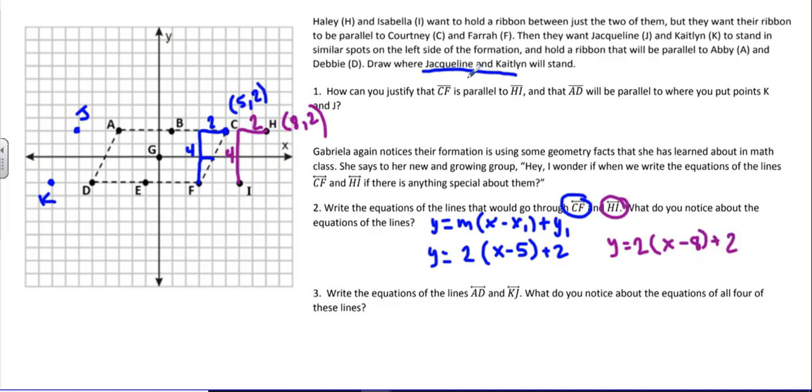And what do you notice about the equations of the lines? Well what I notice is that they have the same slope. Now the points that I chose happen to be at the same y coordinate, but I could have used point I instead of point H. So that's something that wouldn't necessarily happen. It's just the point that I chose. But the slopes, that would not matter which point I chose on the line, the slopes would be the same.